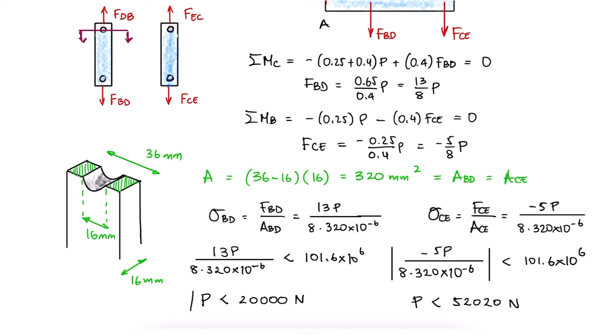If we want neither of them to yield, we can state that the maximum load P should be 20 kilonewtons, as for anything higher than that, including the 52 kilonewtons, link DB would plastically deform.